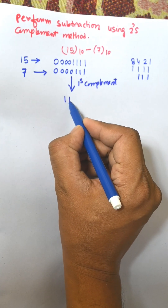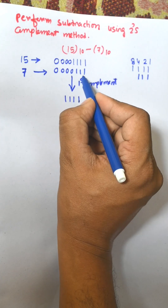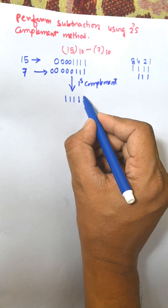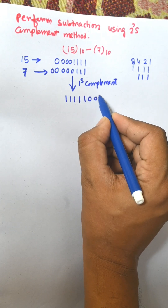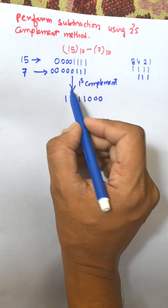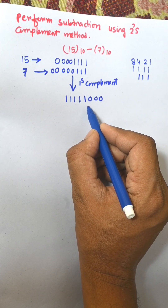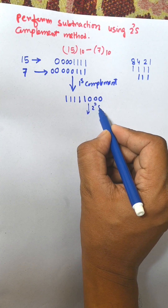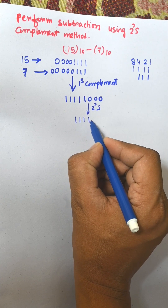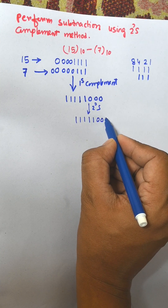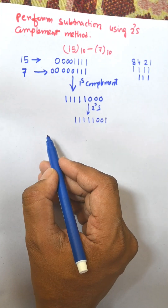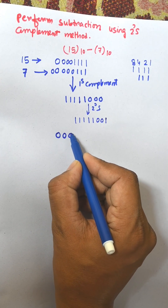The 1's complement of 7 (0 0 0 0 0 1 1 1) is 1 1 1 1 1 0 0 0. Then the 2's complement is obtained by adding 1: 1 1 1 1 1 0 0 0 plus 0 0 0 0 0 0 0 1 equals 1 1 1 1 1 0 0 1. This is the 2's complement of 7.